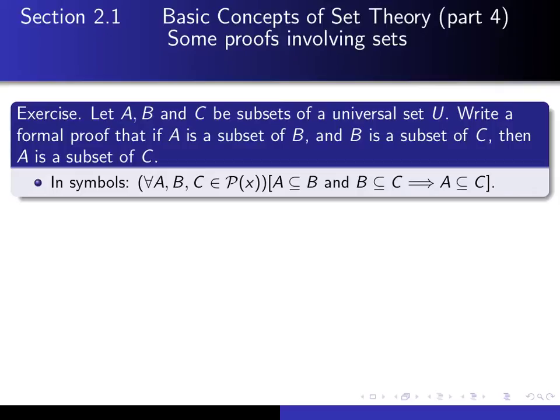Now, how should you write a proof of something like that? Well, this is a really standard statement, a conditional statement. So you should begin by saying let A, B, and C be subsets of U. Suppose A is a subset of B and B is a subset of C. And then you should try to deduce that A is a subset of C.